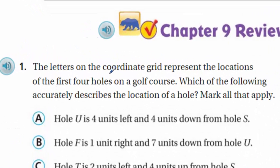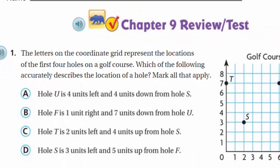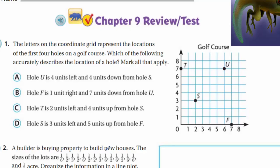It says: since the letters on the coordinate grid represent the locations of the first four holes on a golf course, which of the following accurately describes the location of a hole? Notice the word 'accurately' — that means it's got to be correct. This is 'mark all that apply.'